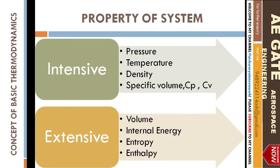Now we'll see the properties of a system. Properties are classified in two forms: intensive and extensive. These properties can be clarified by whether they are dependent or independent of mass. Intensive properties are independent of mass — for example, pressure, temperature, density, specific volume, specific heat at constant pressure (Cp), and specific heat at constant volume (Cv). Extensive properties depend on mass — for example, volume, internal energy, entropy, and enthalpy.